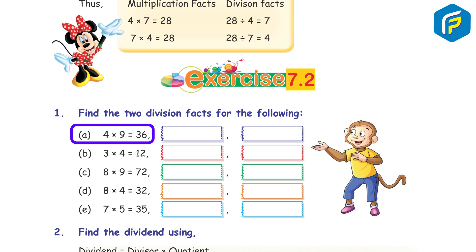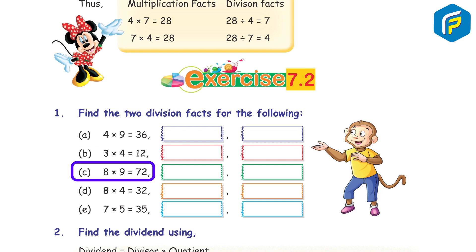Exercise 7.2, Question 1: Find the two division facts for the following. a) 4 × 9 = 36: division facts are 36 ÷ 4 = 9 and 36 ÷ 9 = 4. b) 3 × 4 = 12: division facts are 12 ÷ 3 = 4 and 12 ÷ 4 = 3. c) 8 × 9 = 72: division facts are 72 ÷ 8 = 9 and 72 ÷ 9 = 8. d) 8 × 4 = 32: division facts are 32 ÷ 4 = 8 and 32 ÷ 8 = 4.